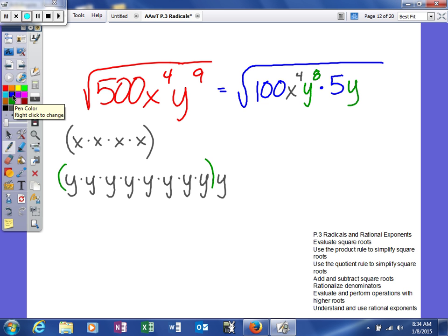So again, we'll use the product rule and we'll break it up into two radicals. So it'll be the square root of 100 x to the 4th, y to the 8th, and then times the square root of 5y. So when we take the square root of this term right here